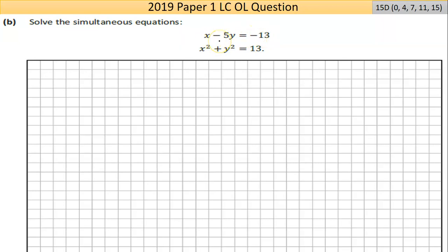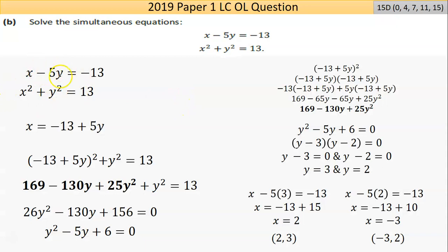I'm looking at basically taking my simpler equation and rearranging it for x or y. To my opinion, rearranging for x would be easier. I've taken x minus 5y equals negative 13. I bring the 5y across, and I'm going to end up with x equals negative 13 plus 5y. So I now have an expression that gives me x.